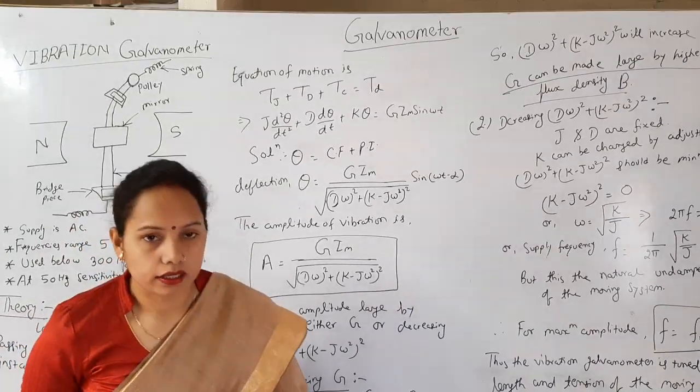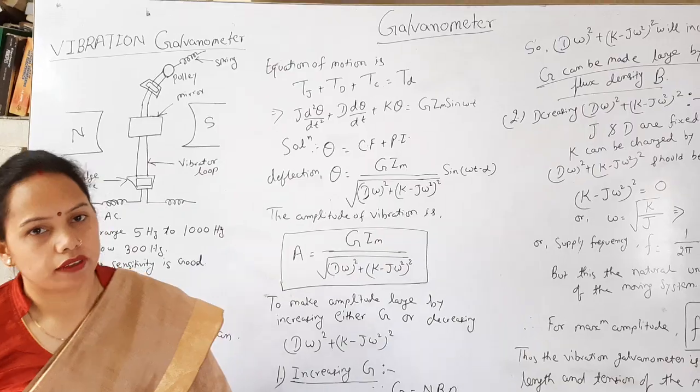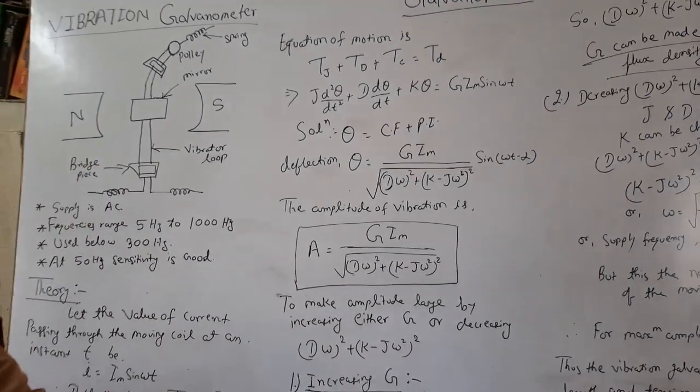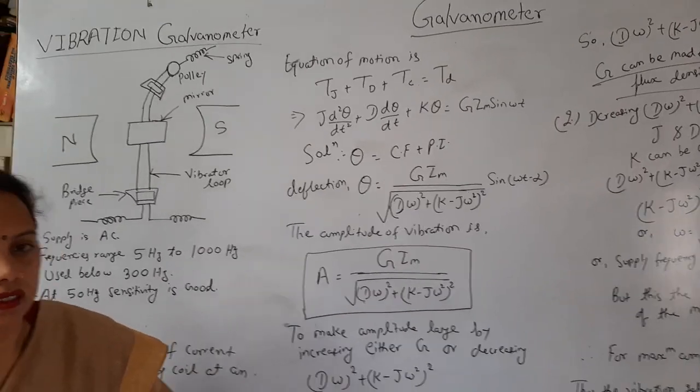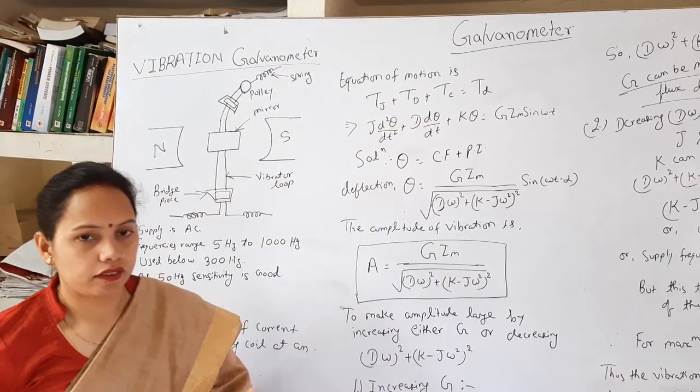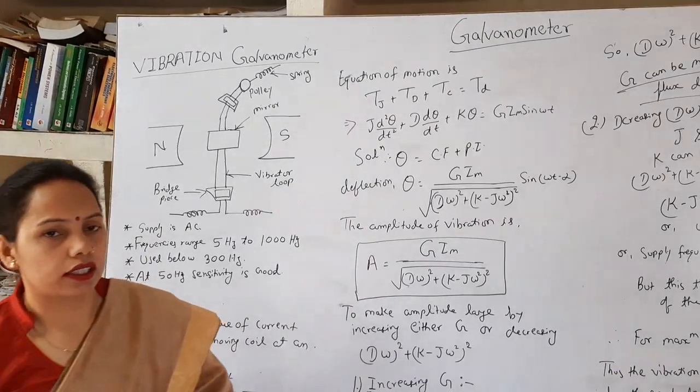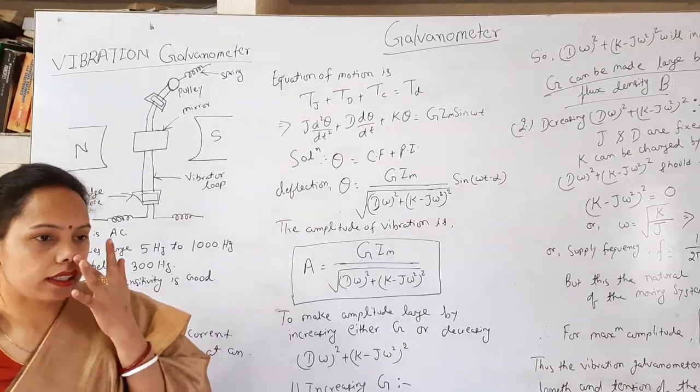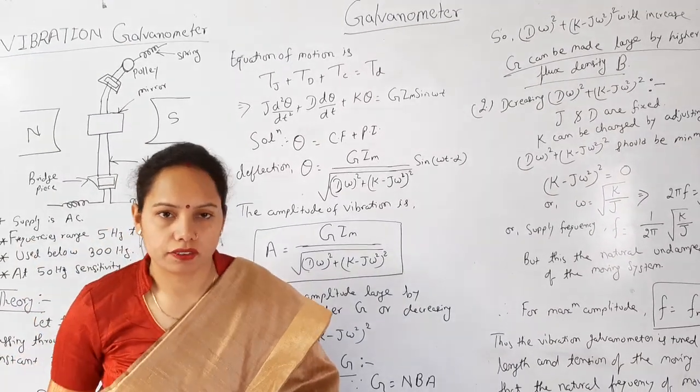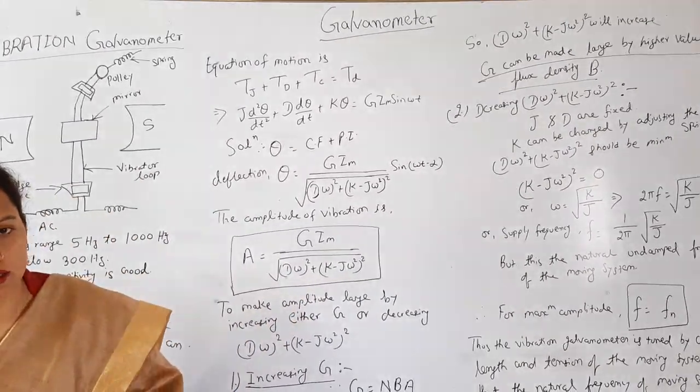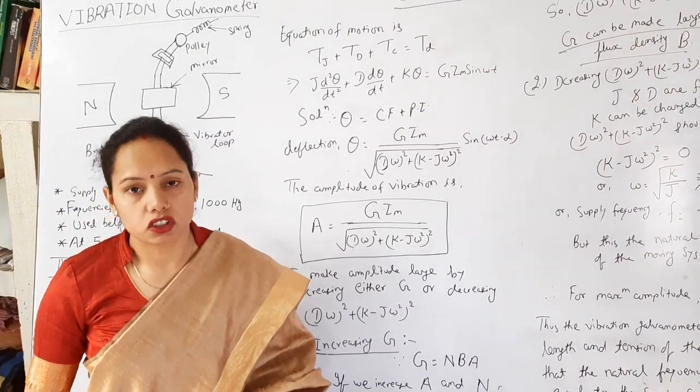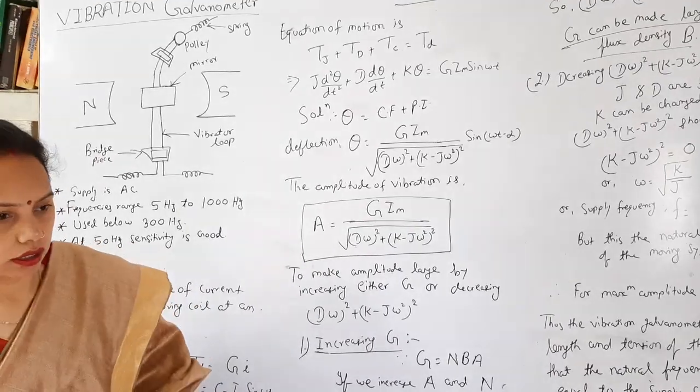Today we will study about the types of the galvanometer, which is vibration galvanometer. As the principle specifies, its supply source is AC. As I have already discussed in lecture number 1 that D'Arsonval galvanometer is of DC supply, vibration galvanometer is of AC supply, and ballistic galvanometer is also AC supply which measures the charge of the electricity.